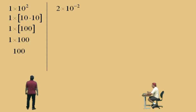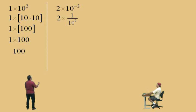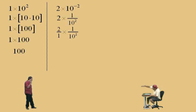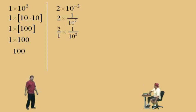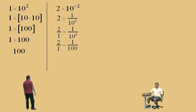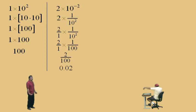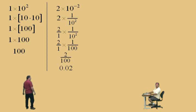Two times ten to the negative two — what does ten to the negative two mean? One over ten squared. So we multiply two times one over ten squared. Write two as a fraction: two over one, and one over ten squared is one over a hundred. Multiply straight across: two over one times one over a hundred is two over a hundred, which is two hundredths. Written as a decimal, that's 0.02. So two times ten to the negative two equals 0.02.